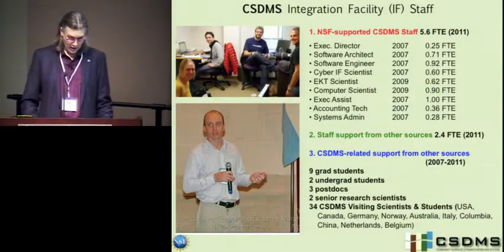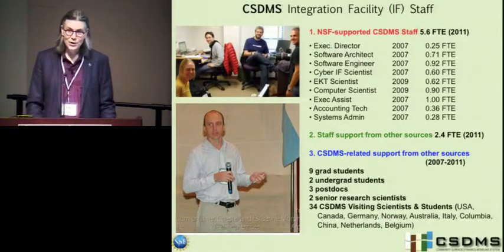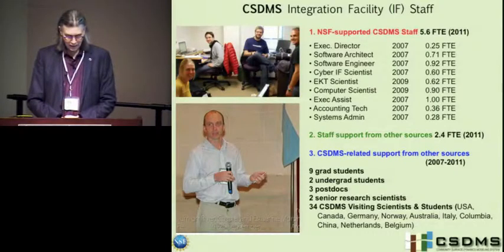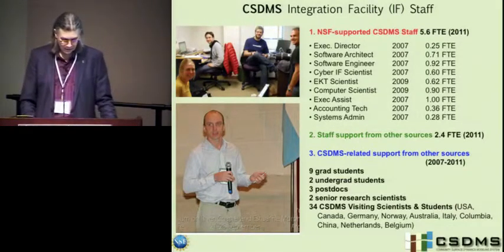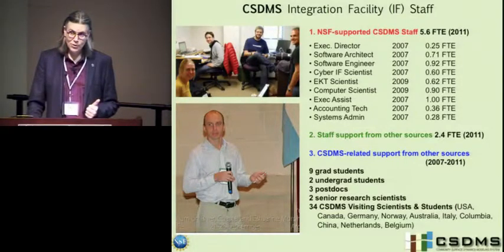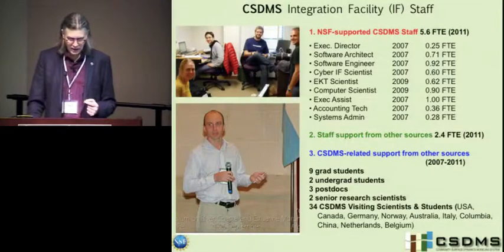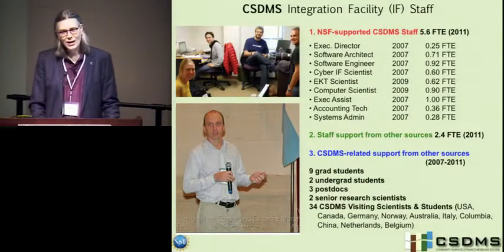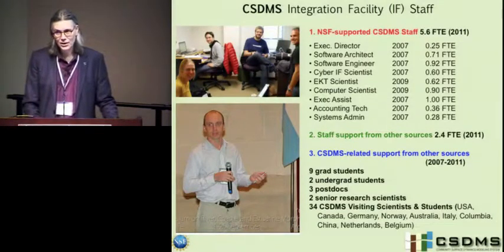If you want to know the size of our staff and who's paying for it: we have 5.6 full-time equivalent positions, most of which are only part-time. We fund the rest of their positions through other sources. Other funds are also funding our graduate students. Since there's no money available through the NSF initial cooperative agreement, a lot of graduate students come through other support. We have only a couple of undergraduates, three post-docs, and two senior research scientists through other funds.